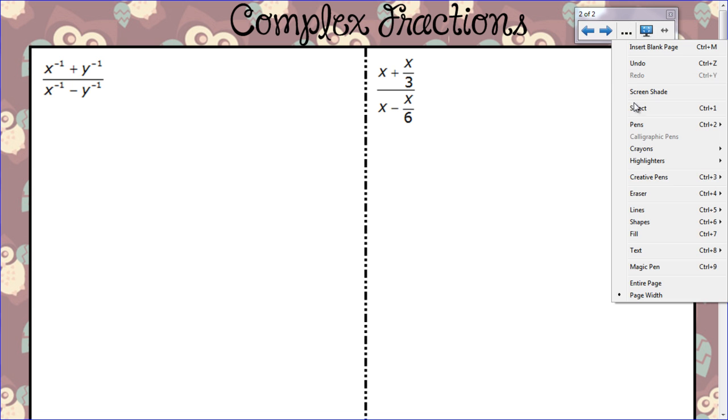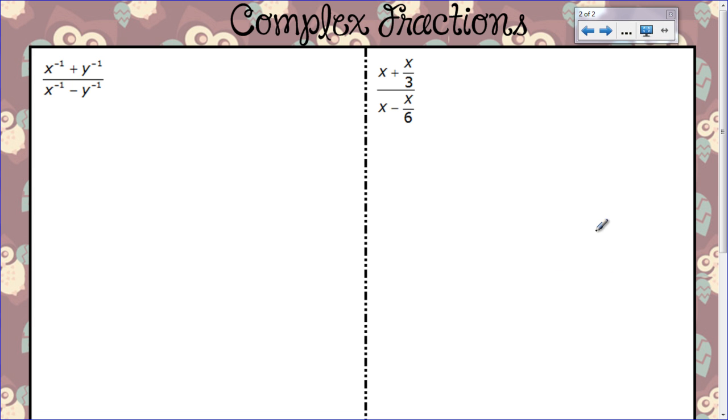And so if everything cancels, you're left with a one. So this becomes one over x. So let's try a couple more. This next one, it doesn't really look like a complex fraction because there's no fractions going on here, but there really are. Remember when we put something to the negative power, it's the same as writing it as one over that thing.